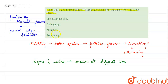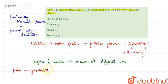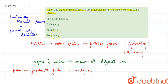The only option left is prepotency. In this mechanism, the pollen of a different flower germinates faster than pollen of the same flower, thus preventing autogamy. So prepotency basically prevents autogamy of the flower.